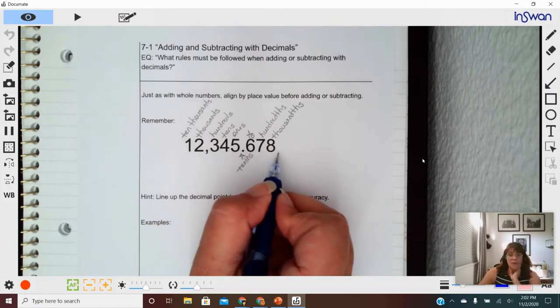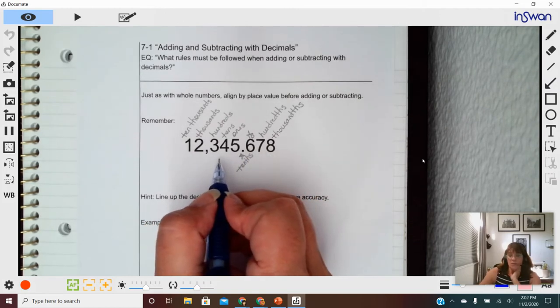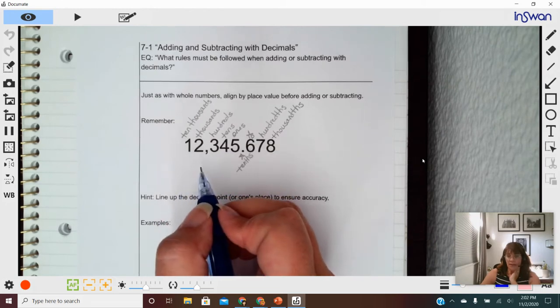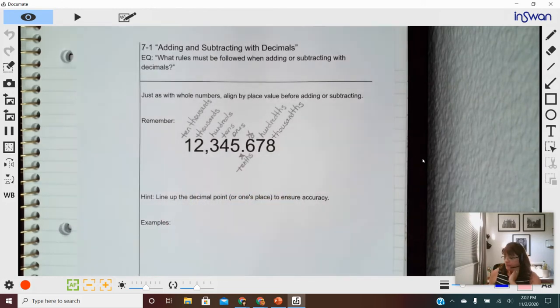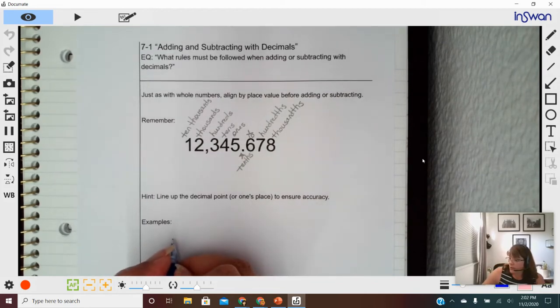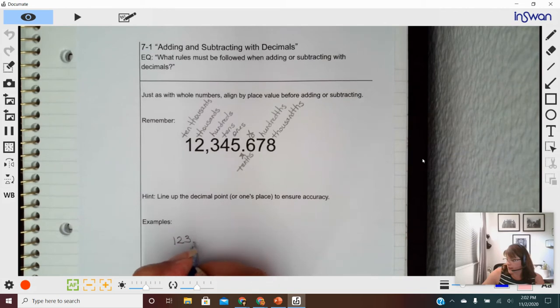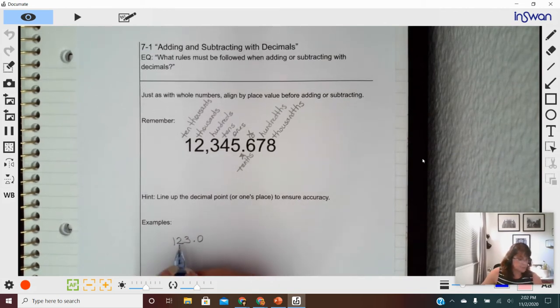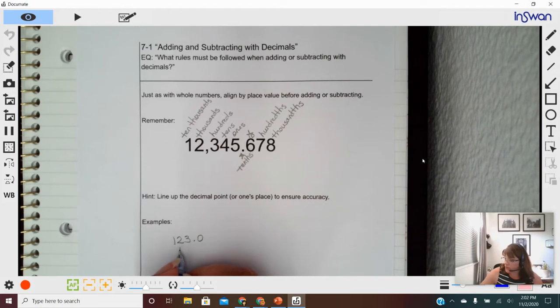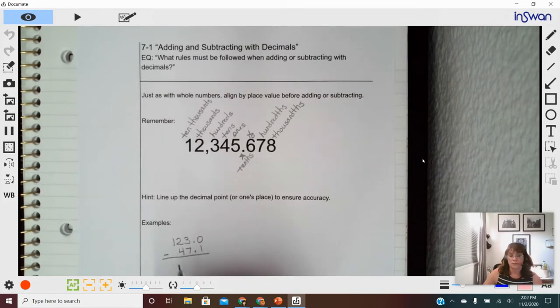The reason that place value is so important when we get into decimals is it's very important with how we line things up for addition and subtraction. So I just wanted to do two quick examples with you today because I feel like most of this is review. But let's say that I had 123.0 minus 47.1. And I'm going to subtract those.